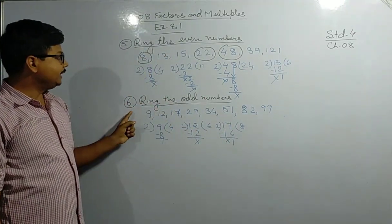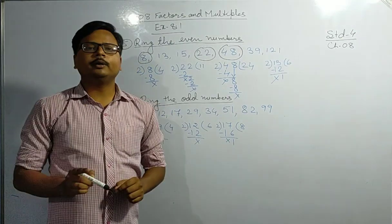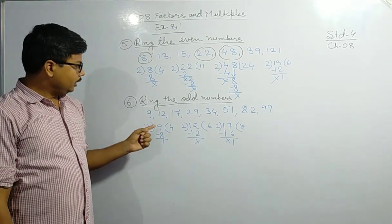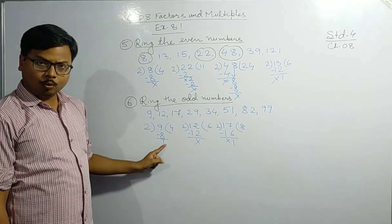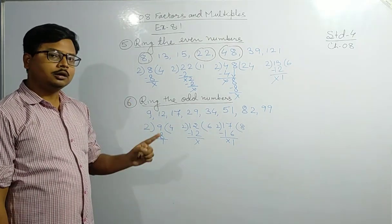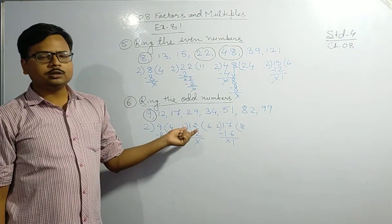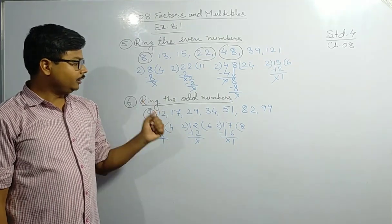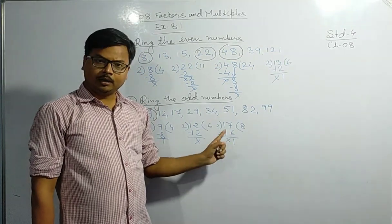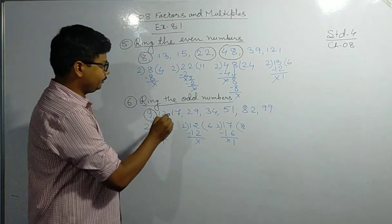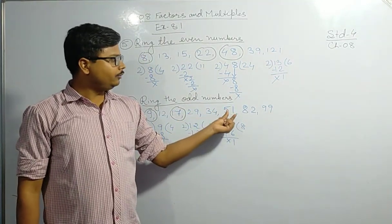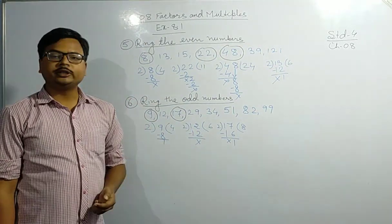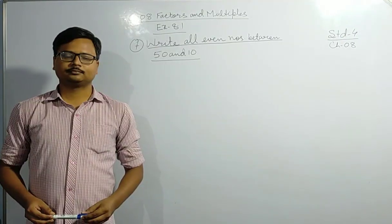Now come to question number six: ring the odd numbers. An odd number is a number which is not divisible by two. For example, nine divided by two gives remainder one, so nine is an odd number. Twenty-nine is also an odd number. For 34, 51, 82, and 99, you have to check on your own whether these numbers are odd or not.